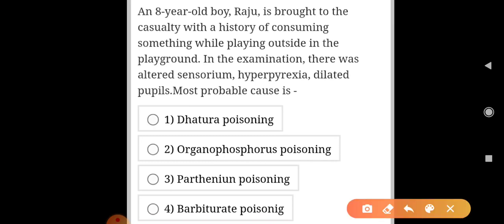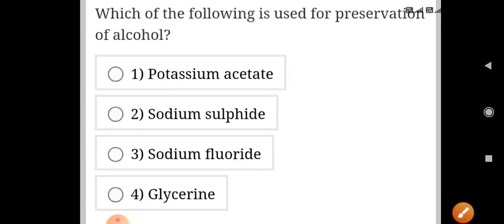An 8-year-old boy Raju is brought to casualty with a history of consuming something while playing outside in the playground. On examination there was altered sensorium, hyperpyrexia, and dilated pupils. The most probable cause is datura poisoning. In datura poisoning we see altered sensorium, hyperpyrexia and dilated pupils.